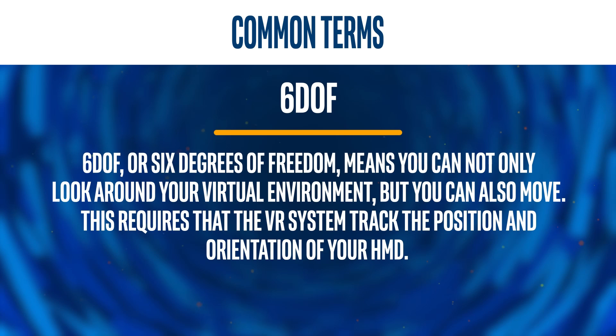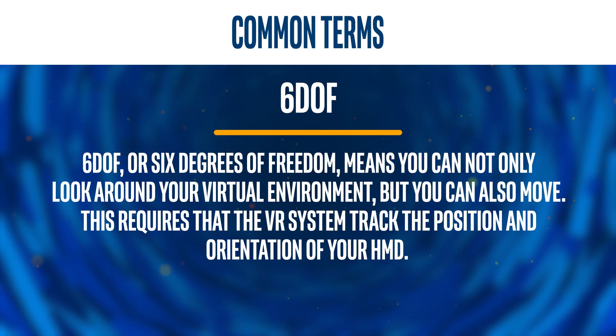Six DOF, or six degrees of freedom, means that you can not only look around your virtual environment, but you can also move. This requires that the VR system track the position and orientation of your HMD. Being able to move around in your virtual environment takes the experience from three degrees of freedom to six degrees of freedom.